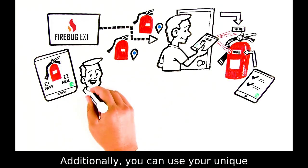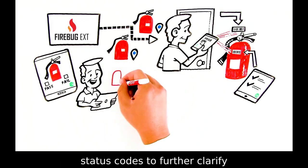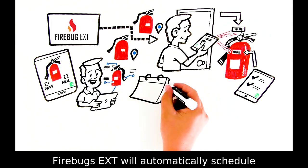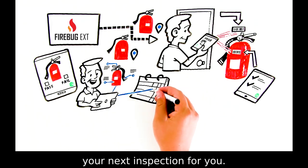Additionally you can use your unique status codes to further clarify the status of the device. Firebug EXT will automatically schedule your next inspection for you.